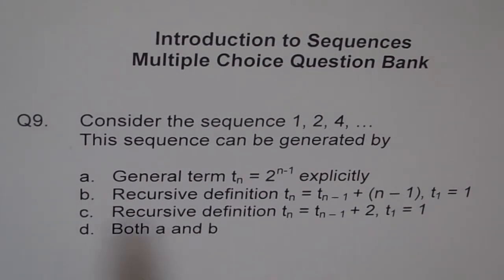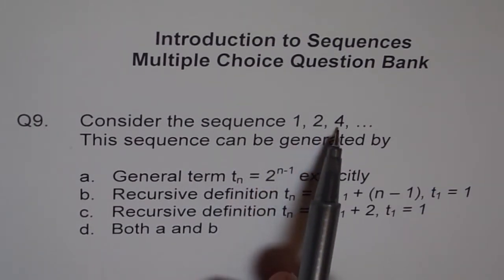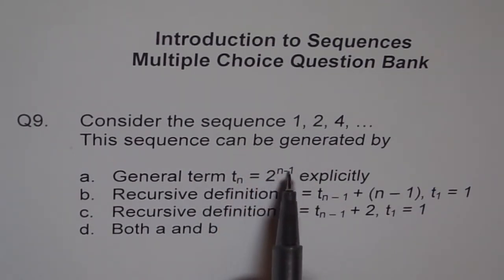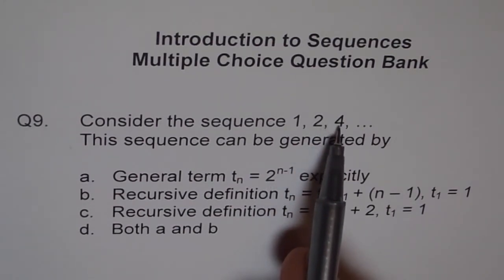So let's check our options. Option 1 gives us a general term explicitly. That means you can plug in any value here and directly find your answer. For example, if I write T_n as 3, so T_3 will be the third term. 2 to the power of 3 minus 1, 3 minus 1 is 2, so 2 squared is 4, so we get that term.